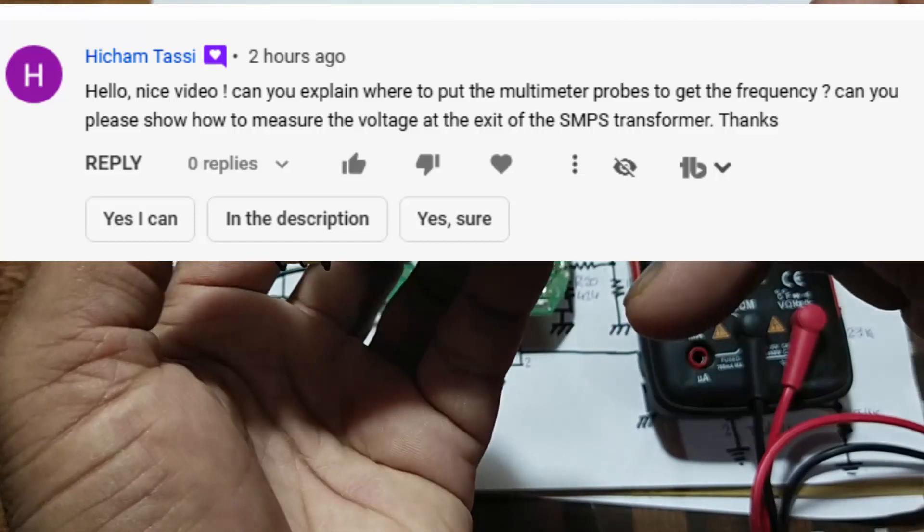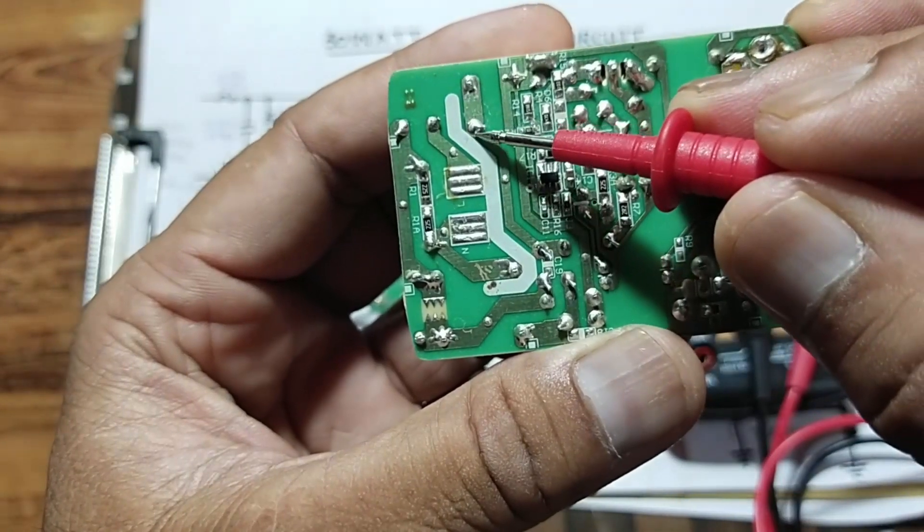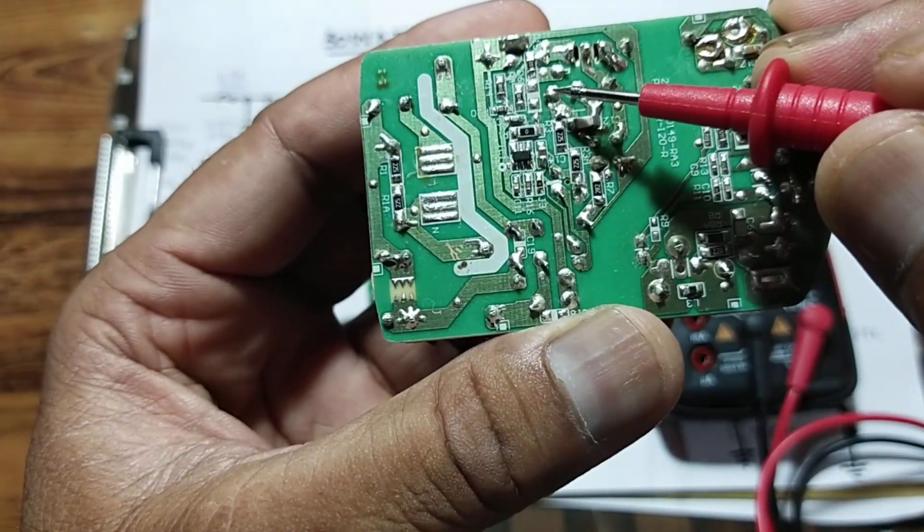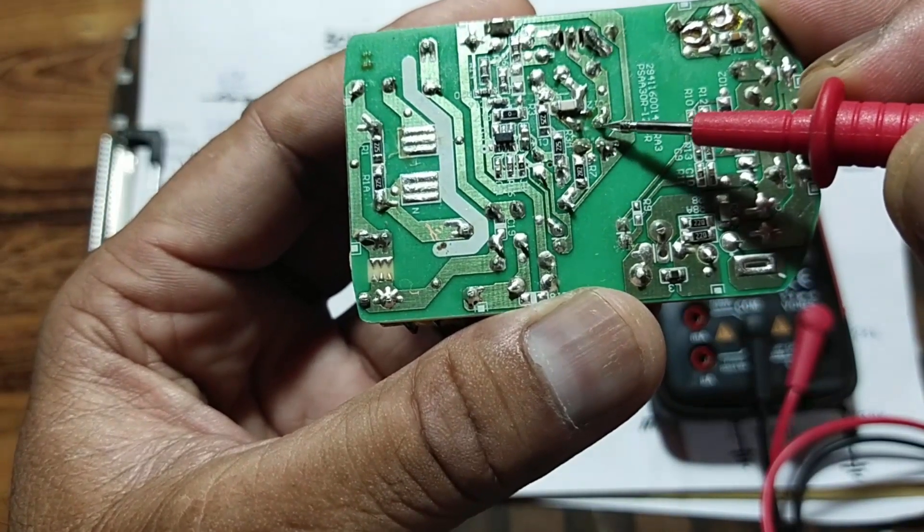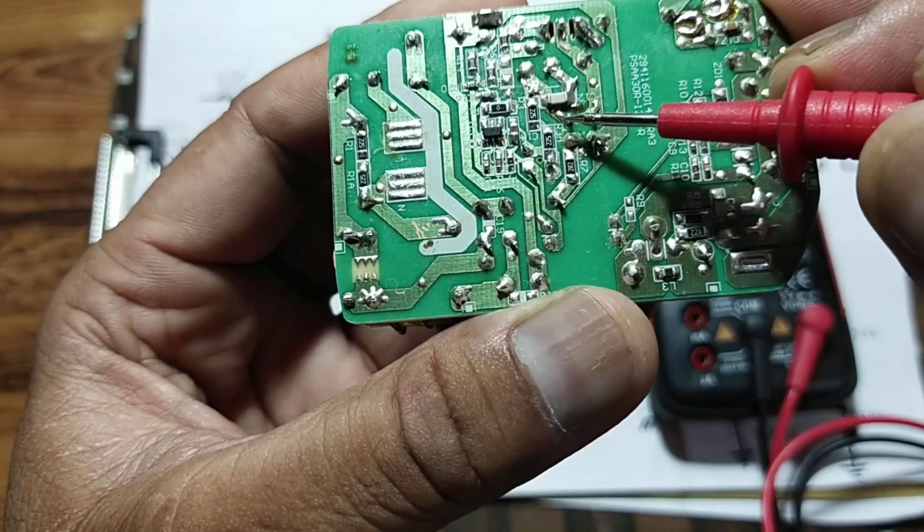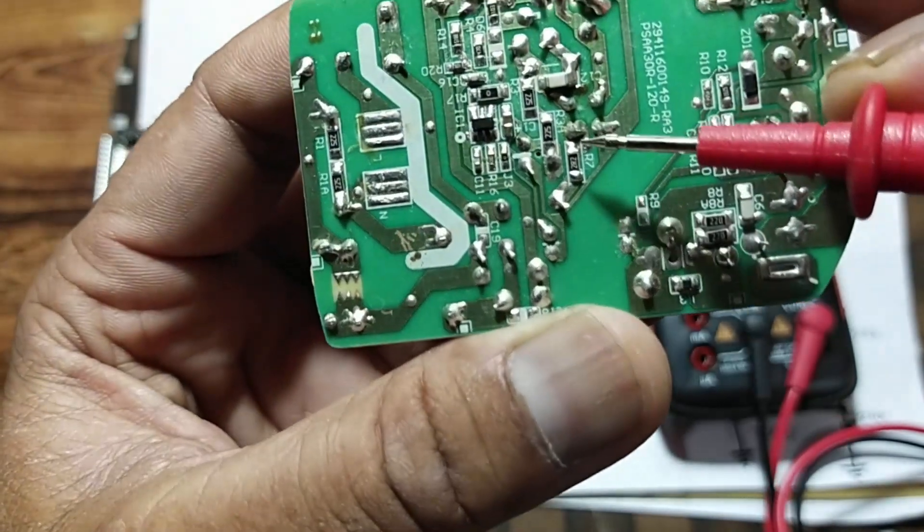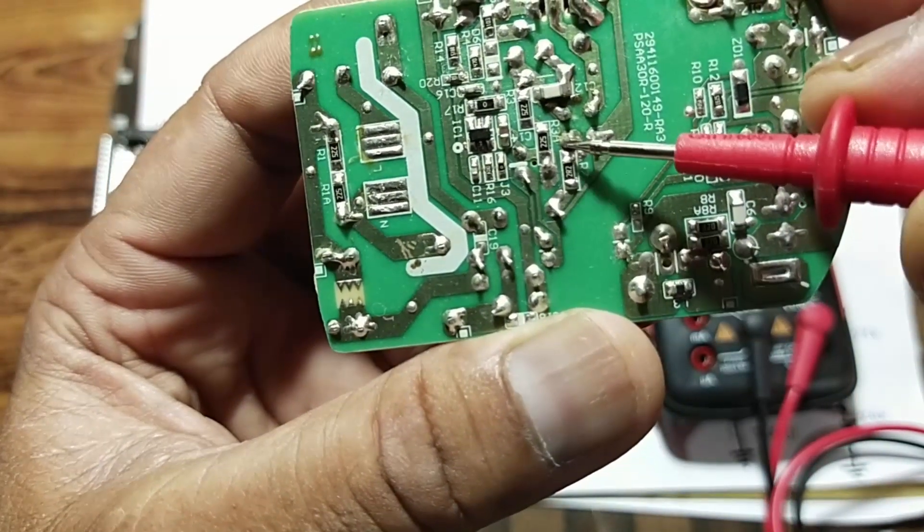If we locate this positive terminal, it's reaching here to the transformer primary. This transformer has primary points here, one and two, and here we have auxiliary winding, bias winding or VCC winding.